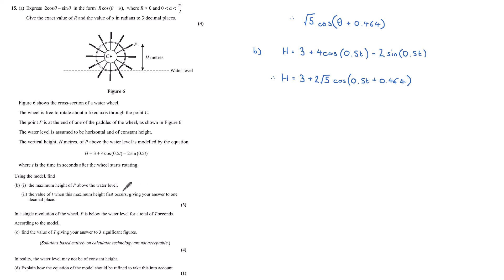Now if I want to find the maximum height of the water wheel, this maximum height occurs when this cos value - cos takes values between negative 1 and 1 - is at its max value when cos(0.5t + 0.464) equals 1. And when it equals 1, the height is 3 plus 2√5. So that is my answer for part (i). That is the maximum height this water wheel can reach.